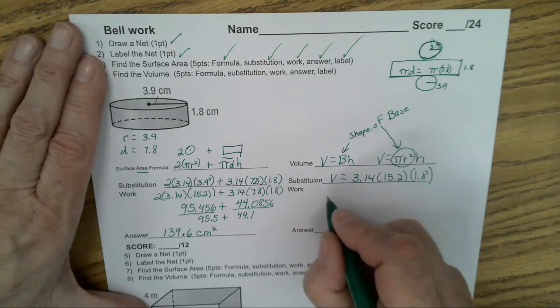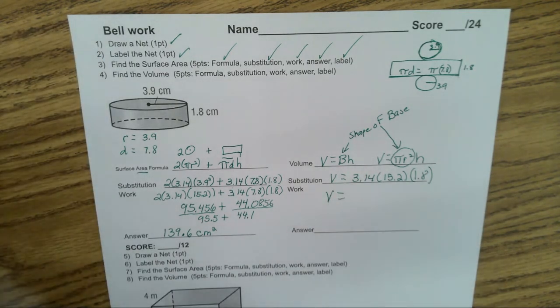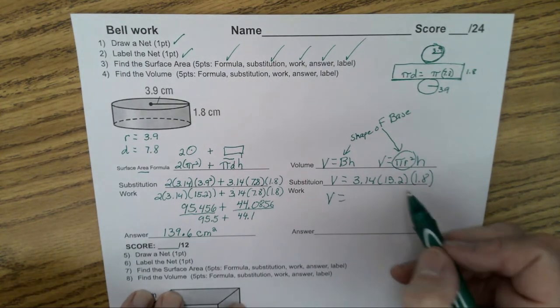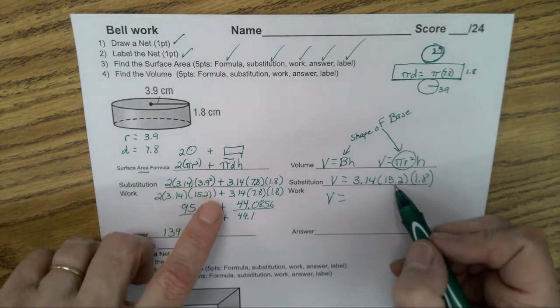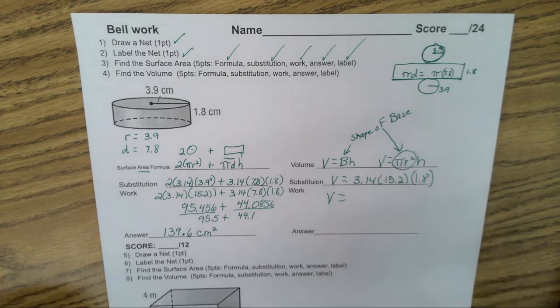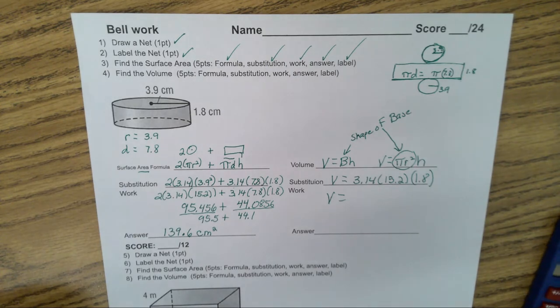So now, on this one there's not a whole lot of work. Sometimes they combine things. Oh, for the radius squared, if I didn't have it here, I would have 3.9 squared and then I would have written this down over there. But since I had it written down, I didn't take the time to write it again.